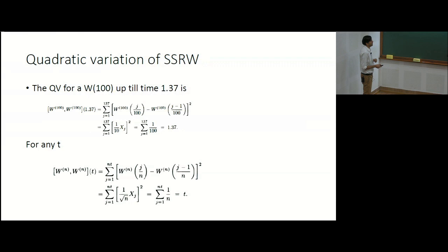Similarly, the quadratic variation of the scaled symmetric random walk equals t, since each Xj squared is 1, scaled by 1/n, and summed over n·t terms, giving t.